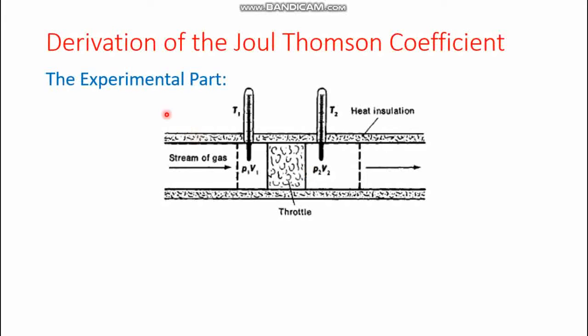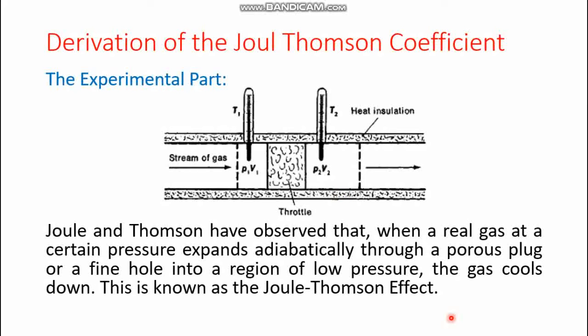One more important point: the wall of the apparatus was completely insulated, meaning no heat was allowed to pass through — there was no heat exchange between the system and the surroundings. So Joule and Thomson observed that when a real gas at a certain pressure expands adiabatically through a porous plug — a throttle or fine hole — into a region of lower pressure (P2 less than P1), the gas cools down, so T2 is less than T1. This is the Joule-Thomson effect.